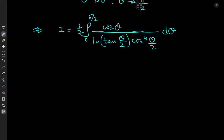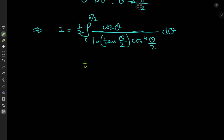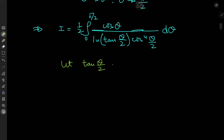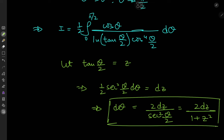We have this new transformed integral in the θ world, and now the substitution becomes a lot more apparent because we have tan(θ/2). This is the Weierstrass substitution, where we let tan(θ/2) equal z. On differentiation, we get 1/2 · sec²(θ/2) dθ = dz, which implies dθ = 2dz / sec²(θ/2). Since sec² = 1 + tan², the denominator becomes 1 + z², so that's our differential element.